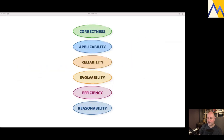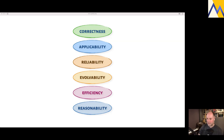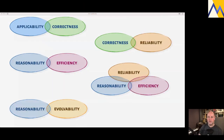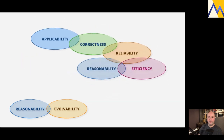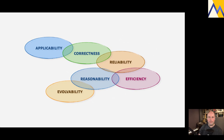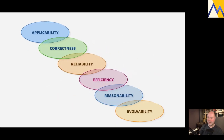That rounds out the material - we've looked at several intersections at this point. We can join them all up into a nice chain: correctness comes up a couple of times, as does reliability, and we can pretty much link them all. There are others we could have talked about, but that's a good image to finish on.